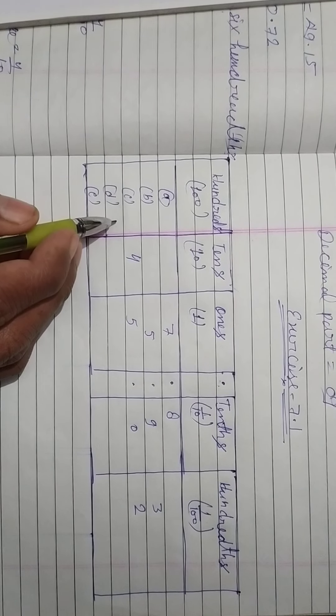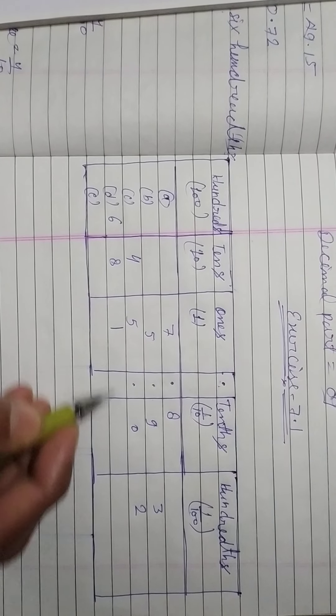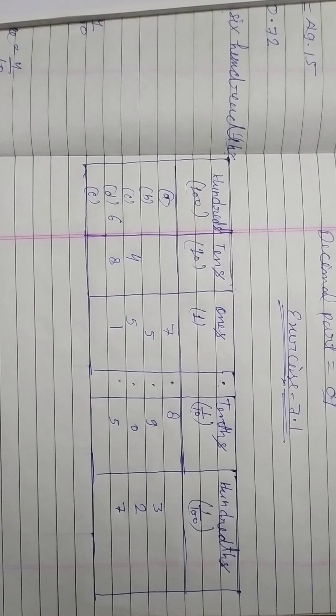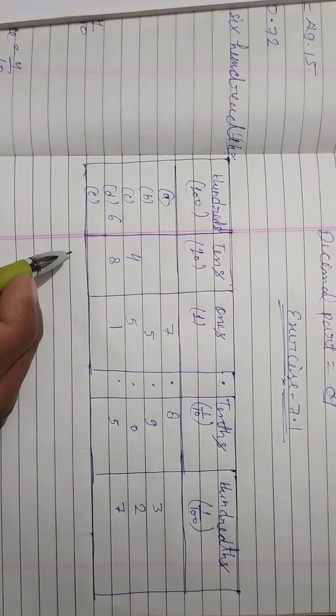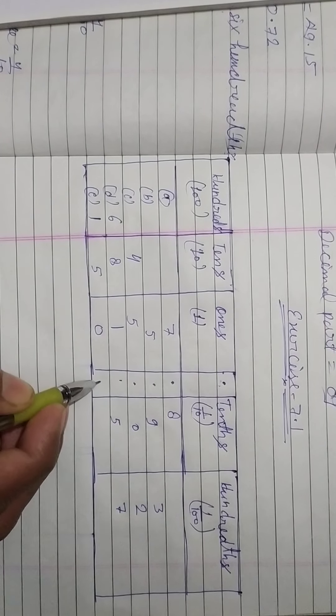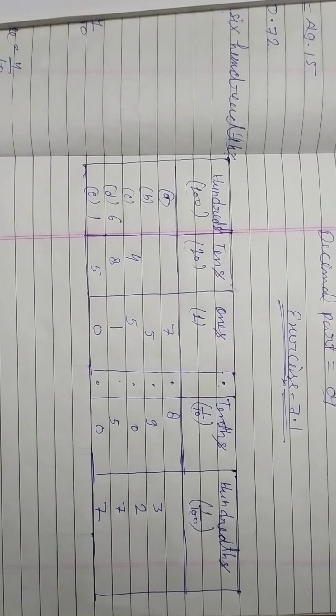Then 681, then 5 will be 7, then 7 will be clear. 150.07, so 150.07, so this way we have shown it where? Place value chart, okay? So our first thing is clear, we have said place value chart.